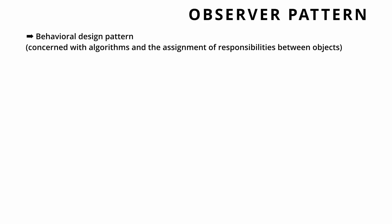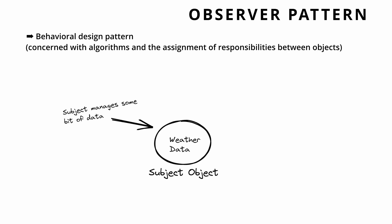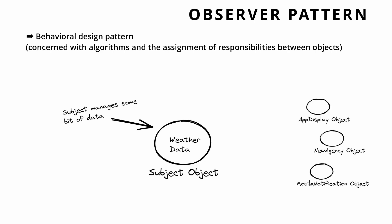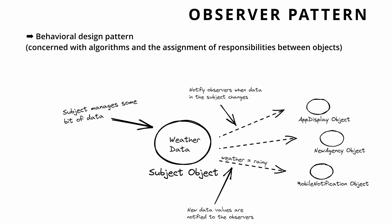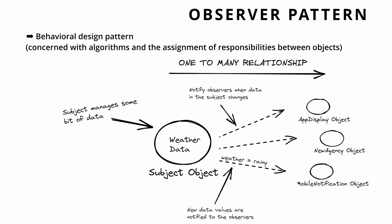Observer pattern is a behavioral design pattern in which an object, called the subject, maintains a list of its dependents, called observers, and notifies them automatically of any change in its state. The observer pattern defines a one-to-many dependency between objects. The subject owns the state and controls it.